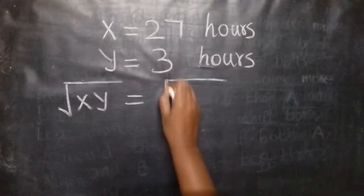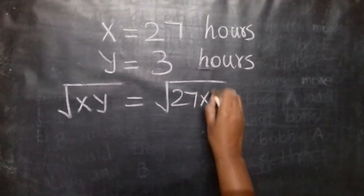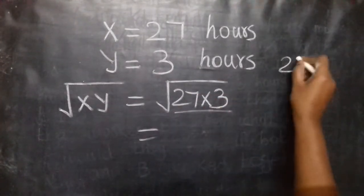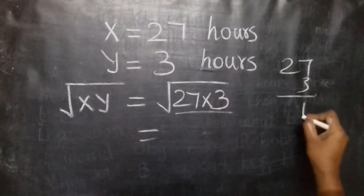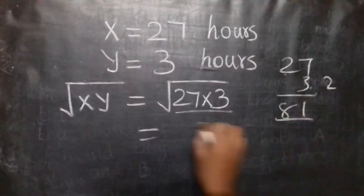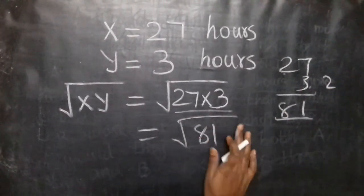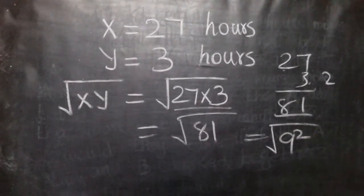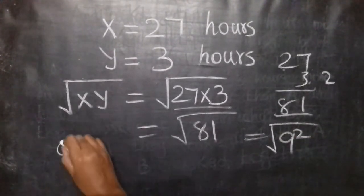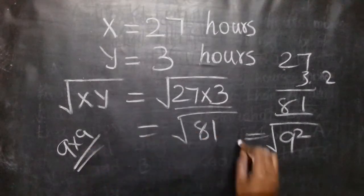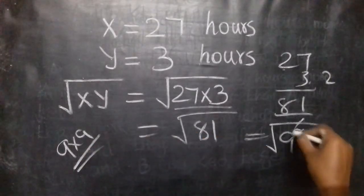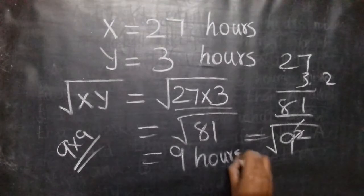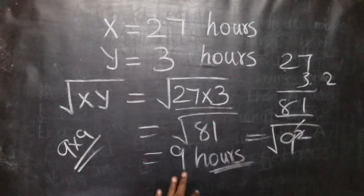Root of 27 multiplied by 3. That is root of 81. Root of 81 — apply 9 squared, because 9 squared is 9 multiplied by 9, which is 81. Square and square root cancel. So the time is 9 hours. The answer is 9 hours.